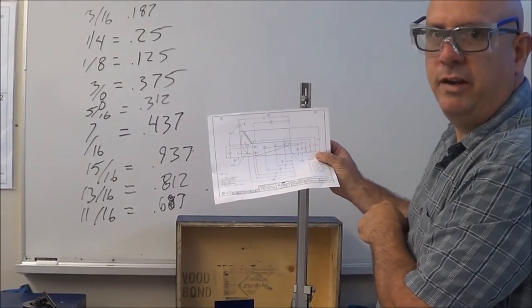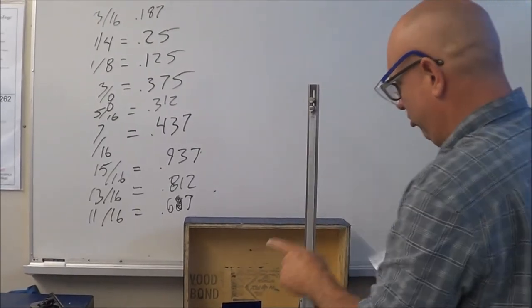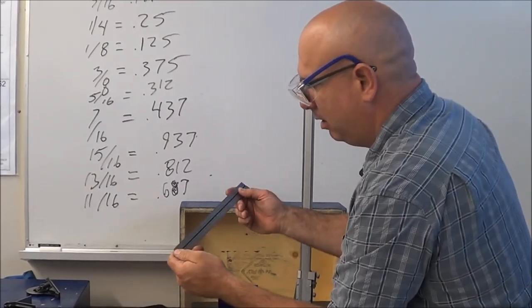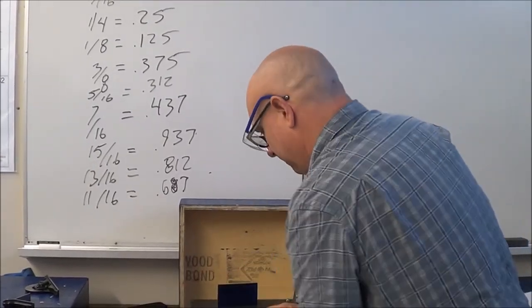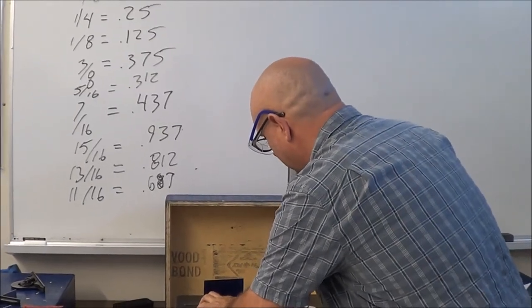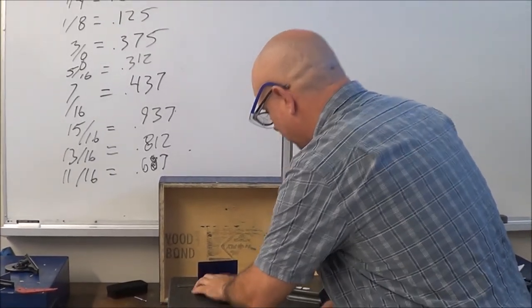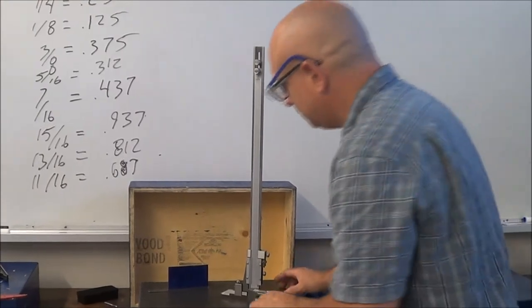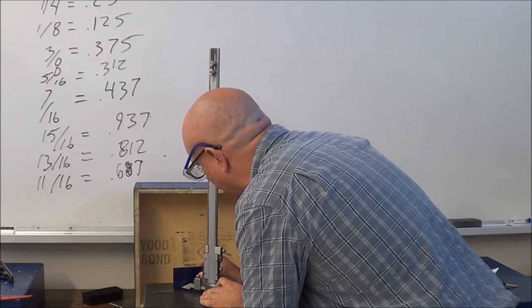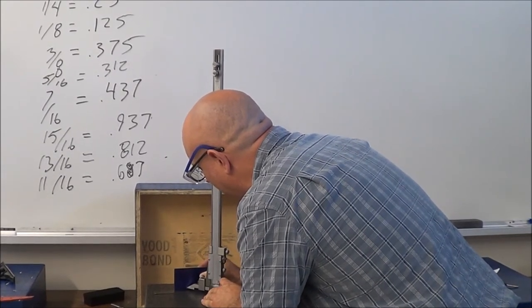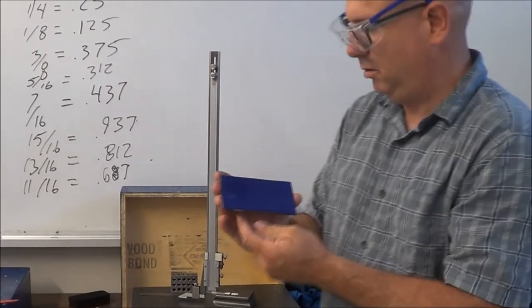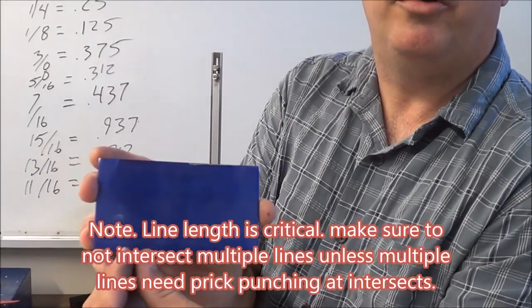To find three and a quarter inches, I use a straight edge. I lay it out on the inch scale. From the corner of my part, and at three and a quarter inches, I scribe a line that's only about a quarter of an inch long.